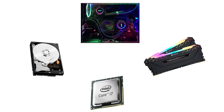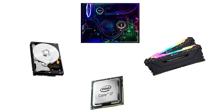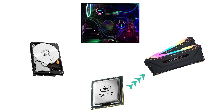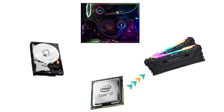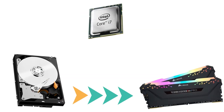You can see the CPU cannot directly access a storage device, which is why we use Random Access Memory. RAM is faster, and even NVMe SSD is faster than a hard disk. So RAM is less in capacity but much faster than a storage device.